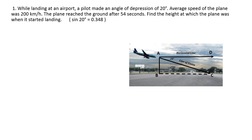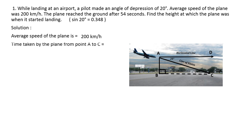Look at this diagram. Angle DAC and angle ACB are alternate angles, and we know that alternate angles are congruent when lines are parallel. Therefore, the measure of angle ACB is also 20 degrees. We now have right-angle triangle ABC in which angle C is 20 degrees. The average speed of the plane is 200 km per hour, and the time taken by the plane from A to C is 54 seconds.